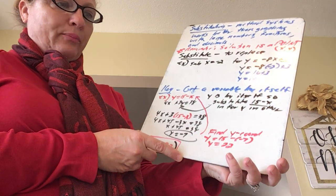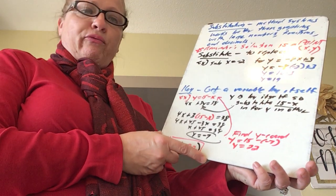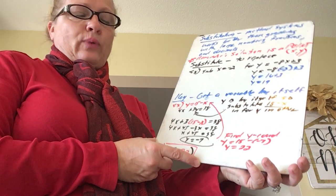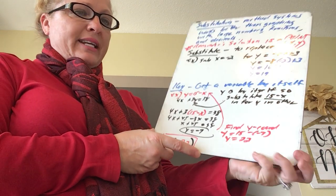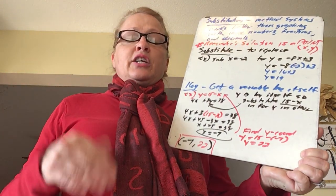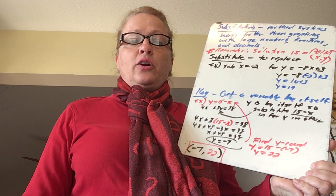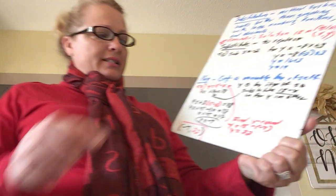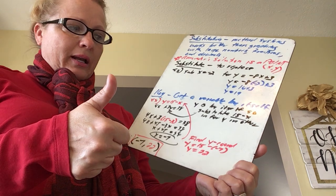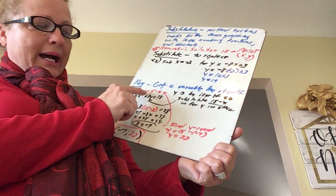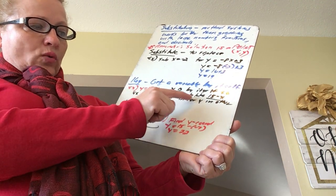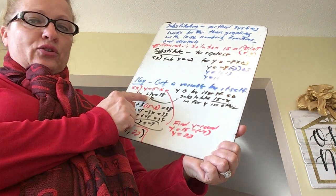Let's take a look at the first example. We have y equals 15 minus x, and we have 4x plus 3y equals 38. We can tell by these large numbers that graphing wouldn't work very well, so we have another approach: substitution. The key is to get one of the equations with a variable by itself. In the first equation, y is already by itself — so that's a good thing.